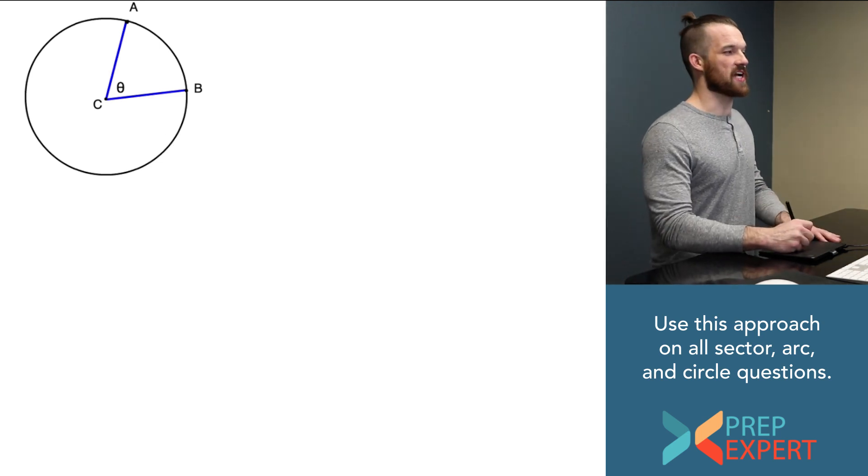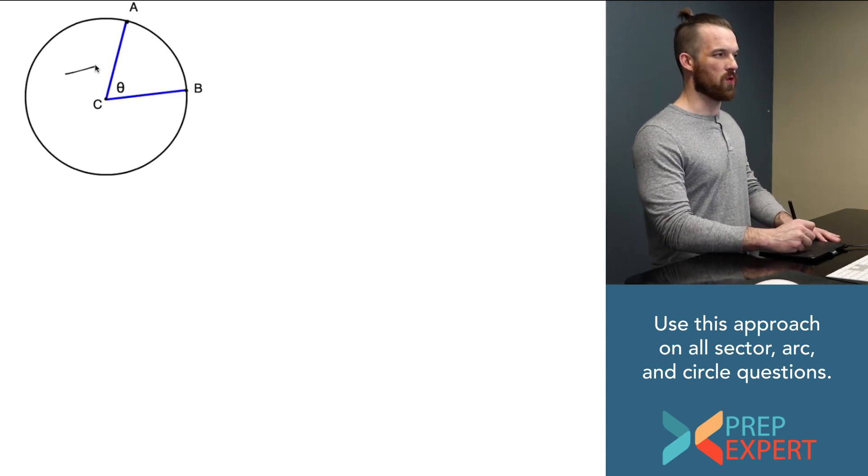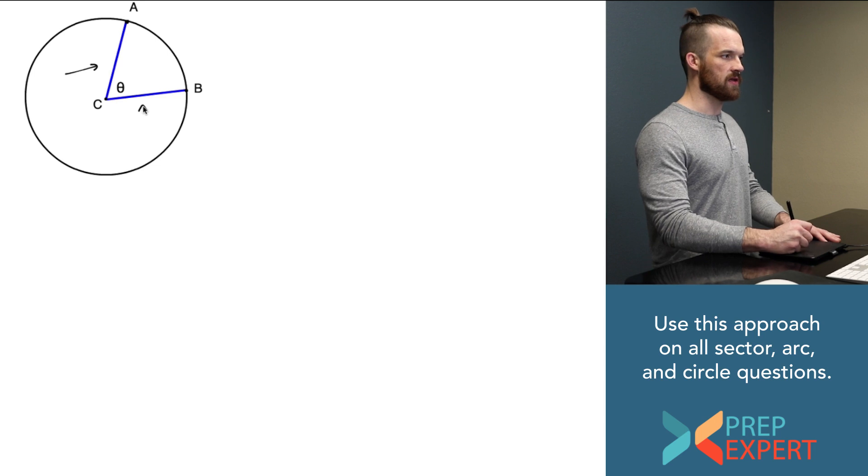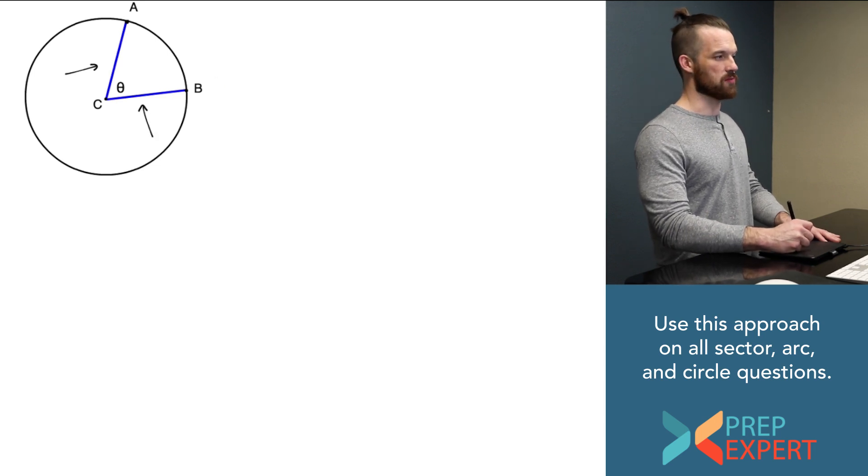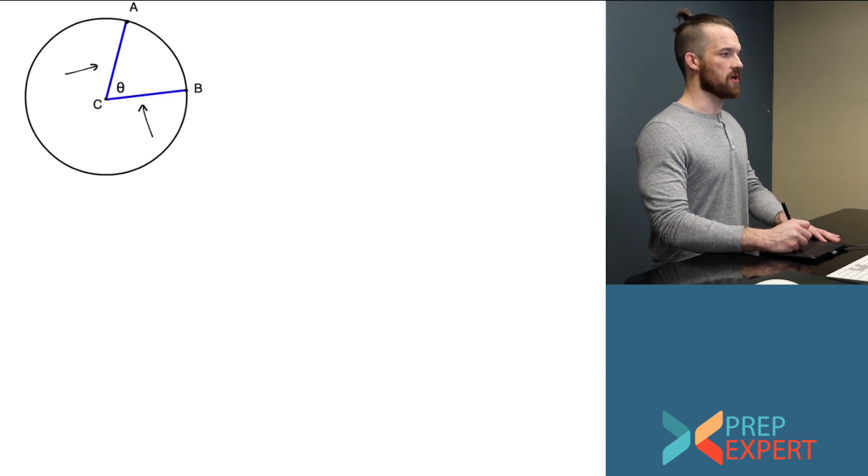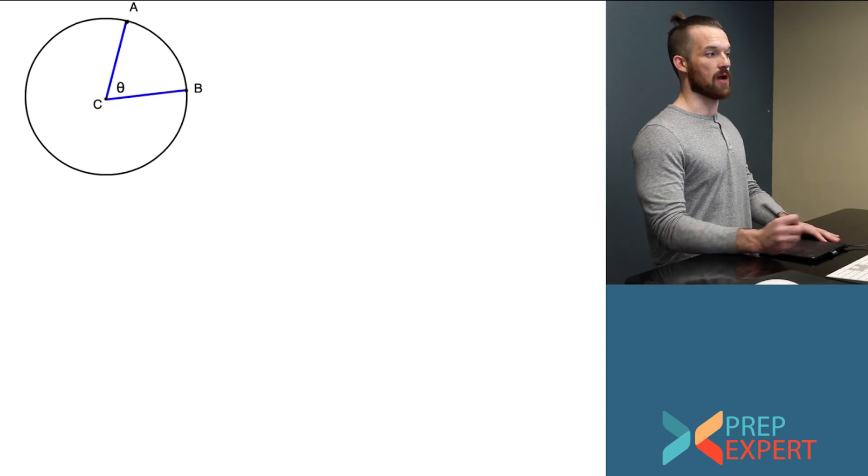Here we have a circle with a sector cut out of it. Now the sector is always formed by two radii that go from the center of the circle to points on the circle.